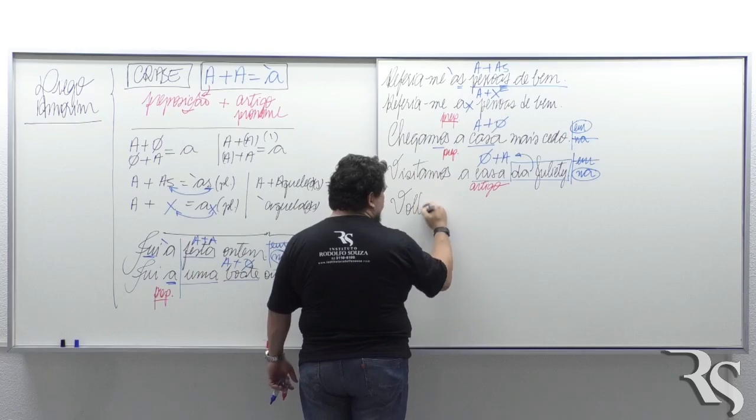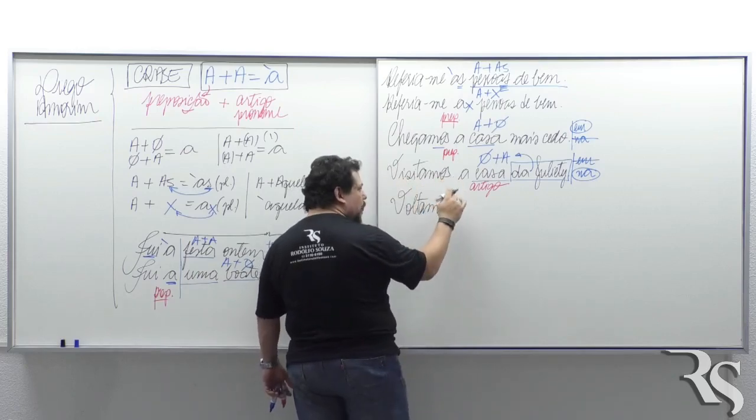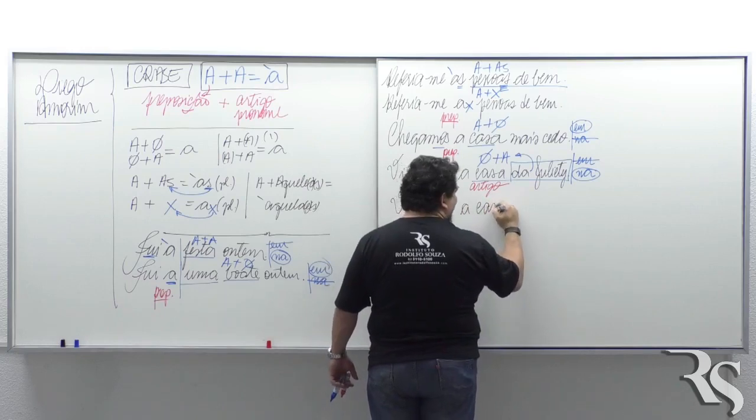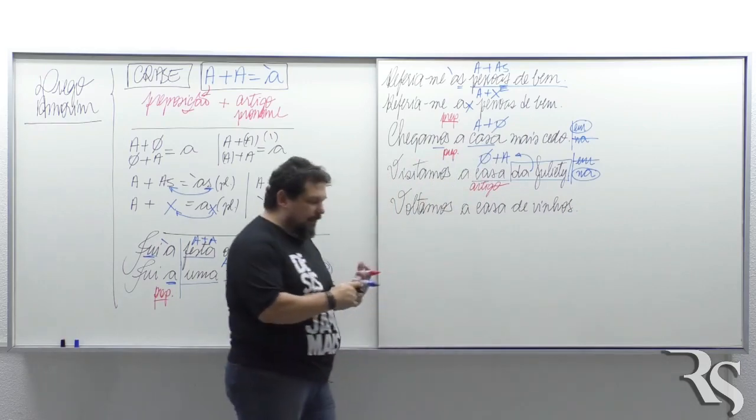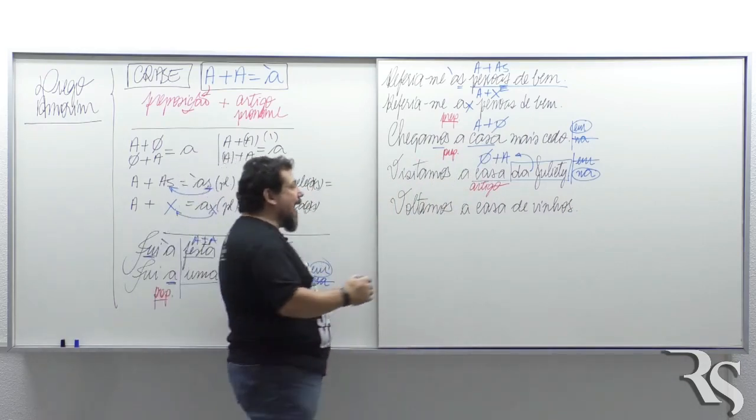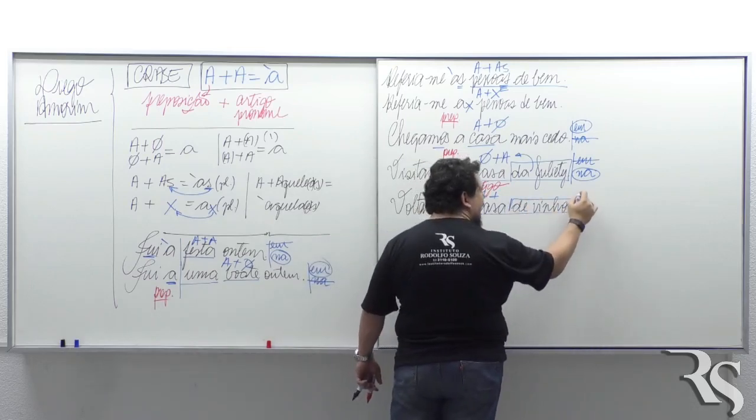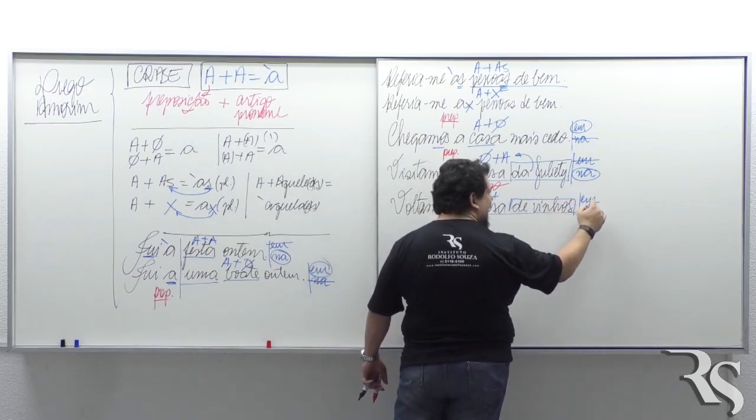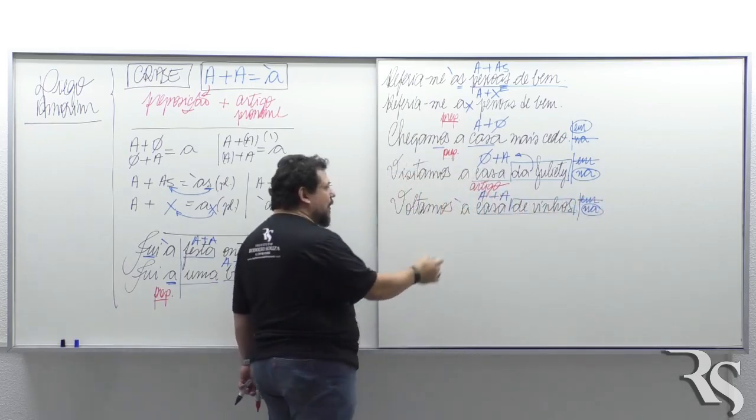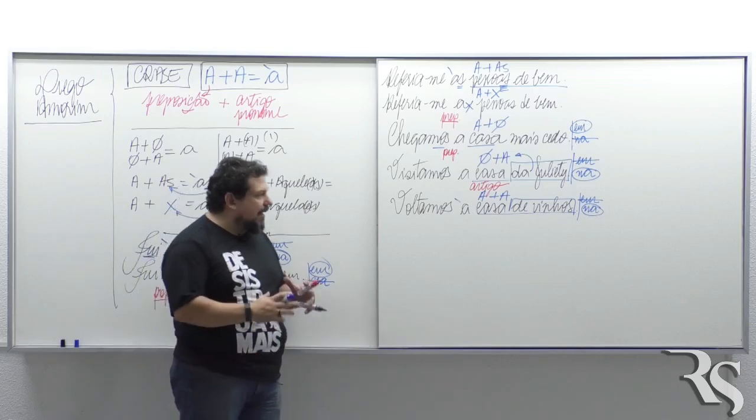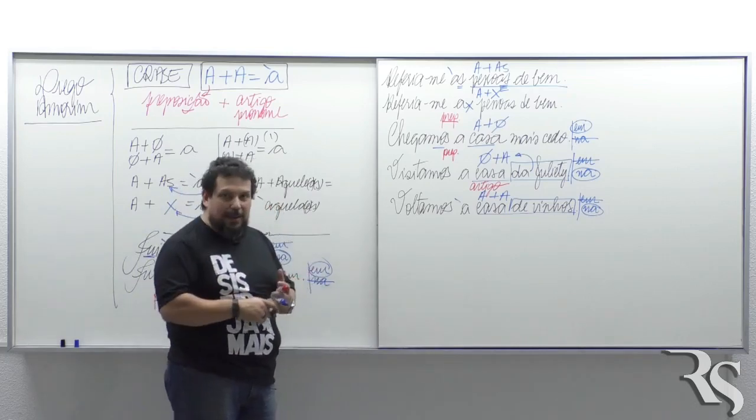Voltamos à casa de vinhos. Quem volta, volta a algum lugar. Casa de vinhos. Ah, está determinada. Faz o teste. Estou em casa de vinhos ou na casa de vinhos? Não é na? Tem A. Tem dois. Tem crase. Só vou ter crase se eu tiver dois As. Não viaja não.